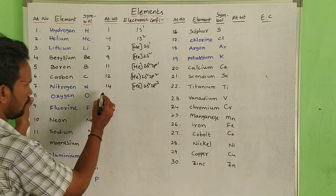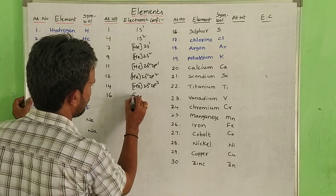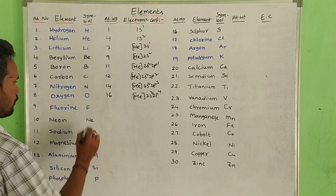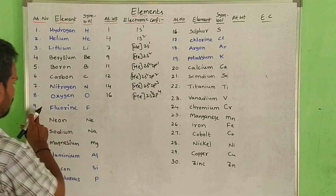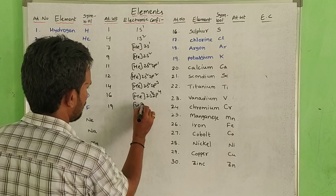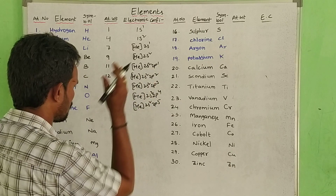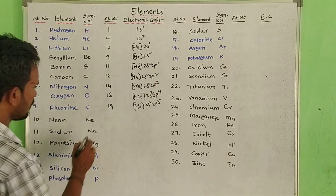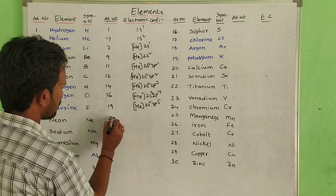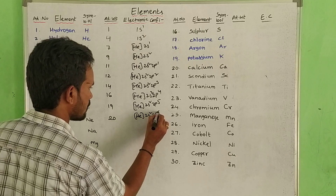Next: oxygen, atomic number 8, atomic weight 16 — [He] 2s2 2p4. Next: fluorine, atomic number 9, atomic weight 19 — [He] 2s2 2p5. Electrons increase one by one. Next: neon, atomic number 10, atomic weight 20 — [He] 2s2 2p6.